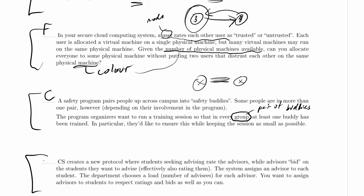CS creates a new protocol where students seeking advising rate the advisors, while advisors bid on the students they want to advise, effectively also rating them. The system assigns an advisor to each student. The department chooses a load, number of advisees for each advisor, and you want to assign advisors to students to respect ratings and bids as well as you can.